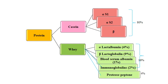Here we see more details about milk proteins. The major protein is casein, making up 80 percent of total protein, and the remaining approximately 20 percent is whey protein. Casein has subcategories including alpha S1, alpha S2, and beta casein. In whey, the two major proteins are alpha-lactalbumin at 4 percent and beta-lactoglobulin at 9 percent, then blood serum albumin at about 1 percent, and immunoglobulins at about 2 percent. There are also small peptones and proteose, all together making up around 20 percent.